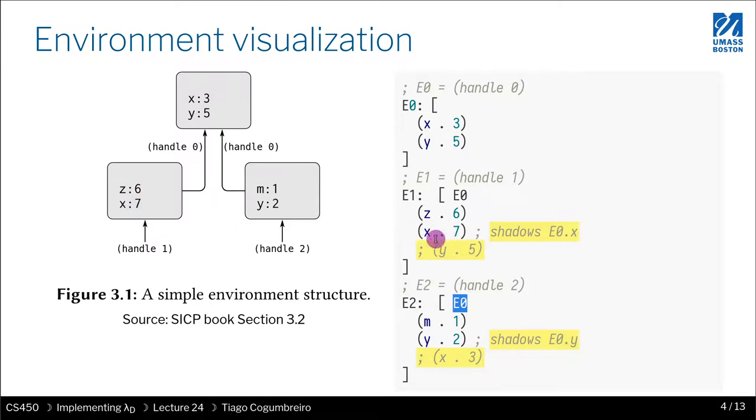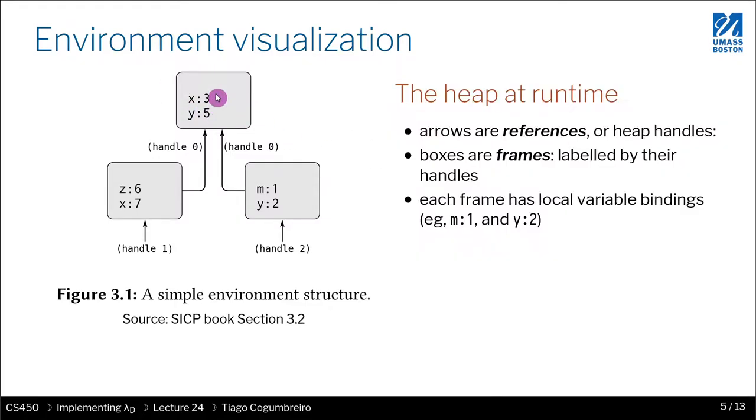Y, which is accessible by this link, is visible to be 5. And E2, you have access to X to be 3 via the parent environment, M to 1, and Y to 2. So to recap, each of these boxes is a frame.